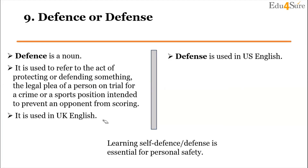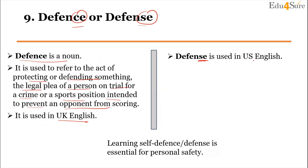First of all, we will see the difference in 'defence' and 'defense'. As you can see, the difference is in the ending: S-E versus C-E. The difference is that 'defence' with C-E is used in UK English, and 'defense' with S-E is used in US English. Defense is a noun used to refer to the act of protecting or defending something, a legal plea of a person on trial for a crime, or a sports position intended to prevent an opponent from scoring.